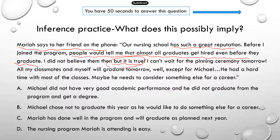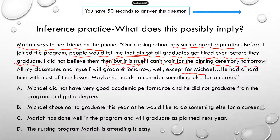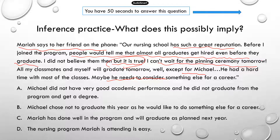Now Mariah says: "I can't wait for the pinning ceremony tomorrow. All my classmates and myself will graduate — well, except for Michael. He had a hard time with most of the classes; maybe he needs to consider something else for a career." You can infer from this that Michael didn't do very well, and it looks like he did not get to graduate.